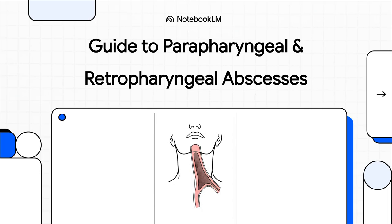Welcome to The Explainer. Today we are diving deep into two of the most critical infections you can encounter in a clinical setting: parapharyngeal and retropharyngeal abscesses. These aren't your run-of-the-mill infections. They demand really sharp diagnostic skills and, more importantly, decisive action.